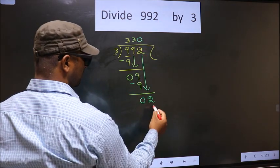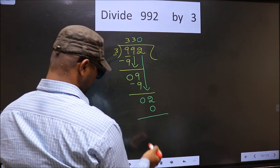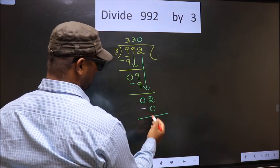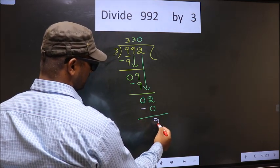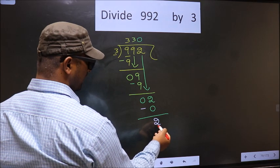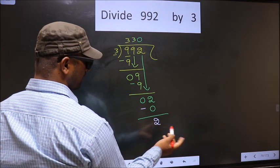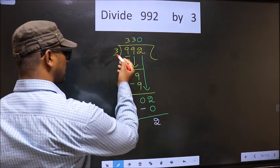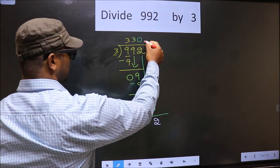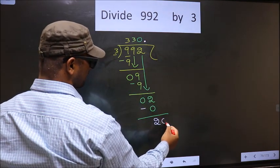So 3 into 0, 0. Now you subtract. 2 minus 0, 2. Over here we did not bring any number down, and 2 is smaller than 3. So now you take a dot and take 0 here.